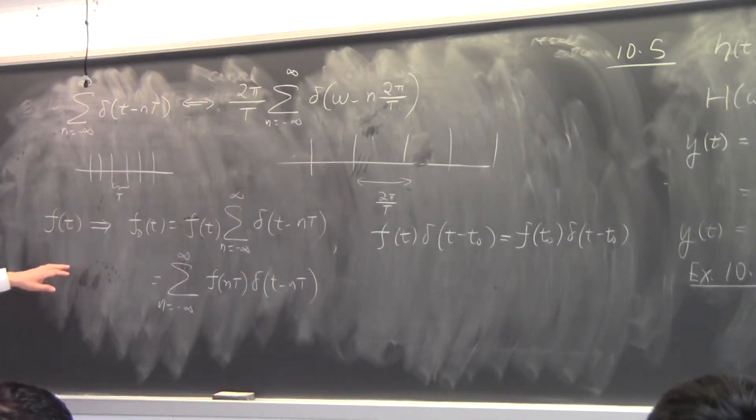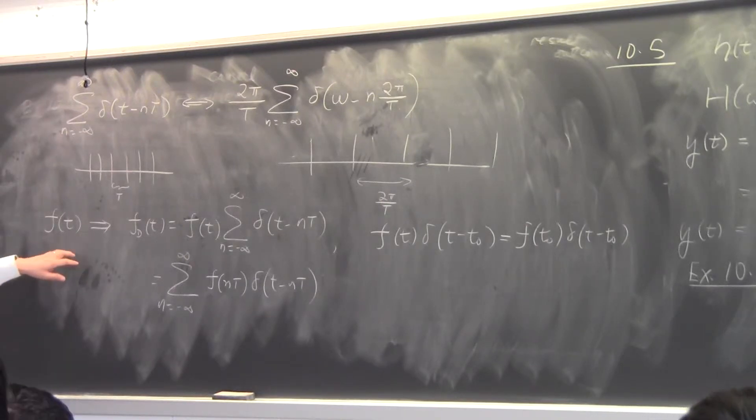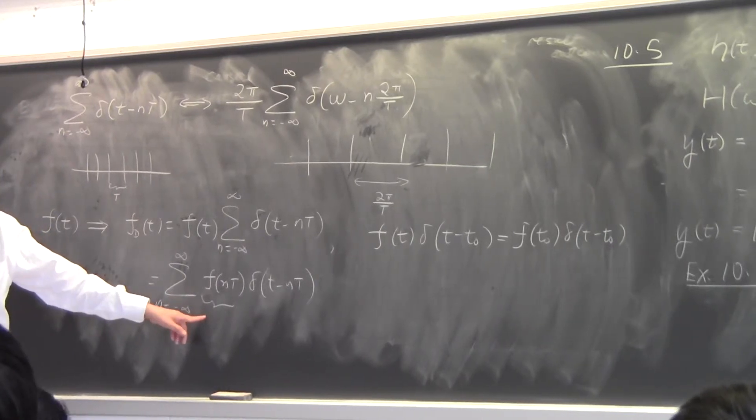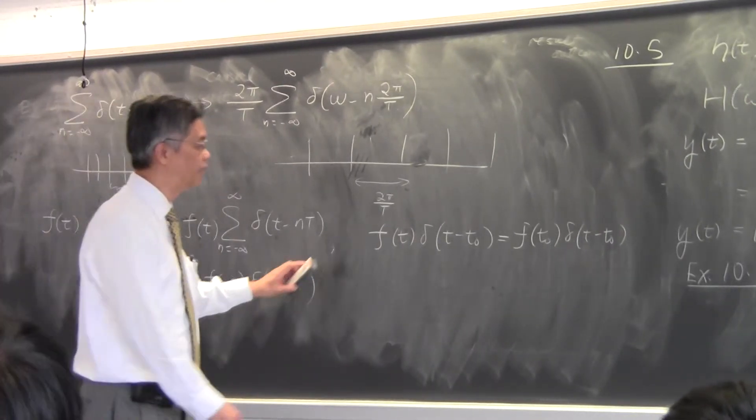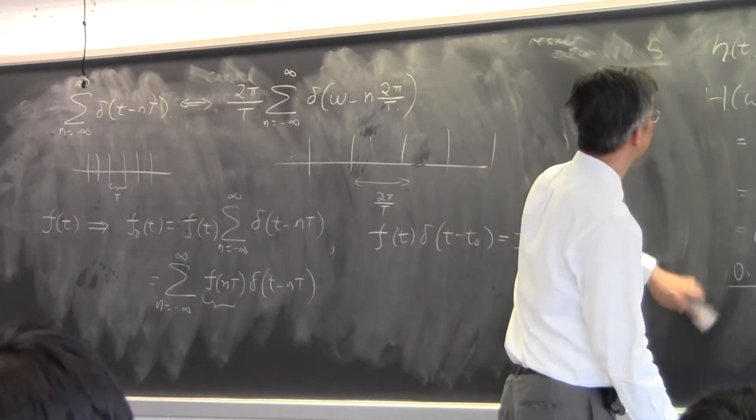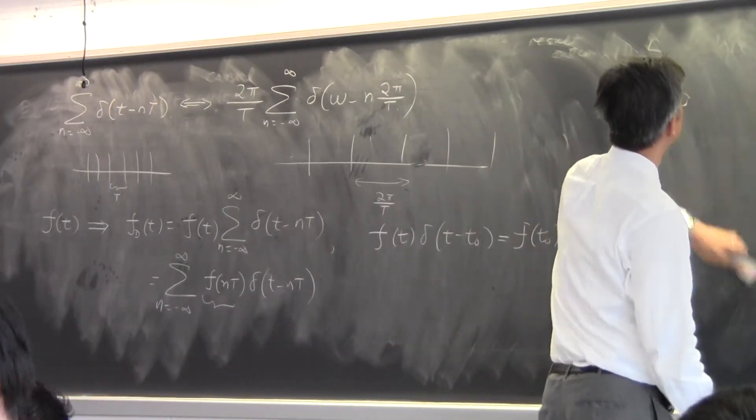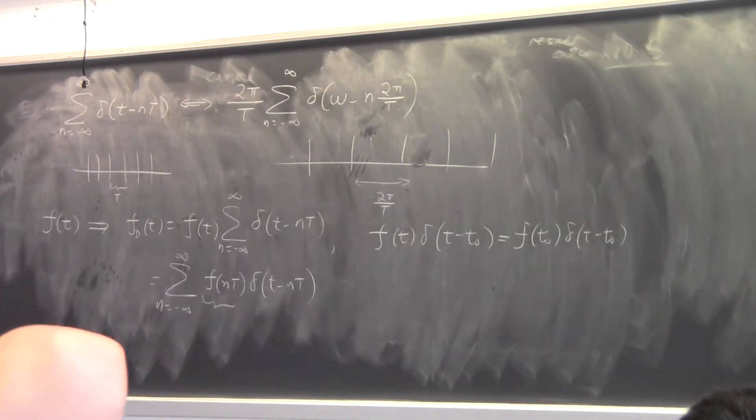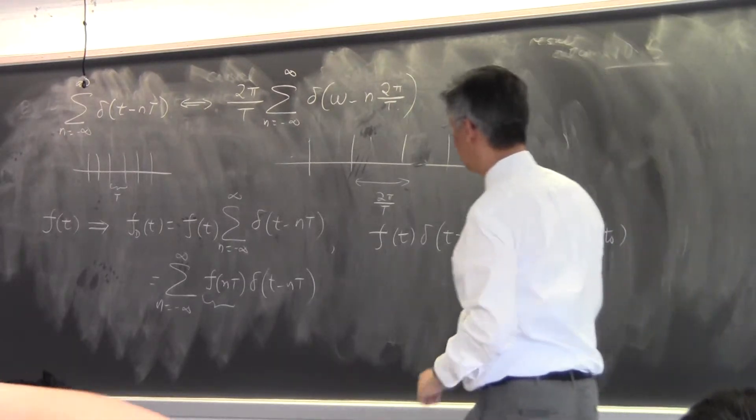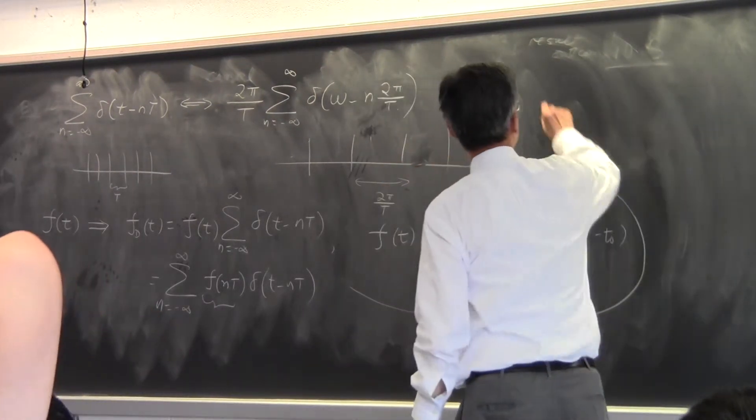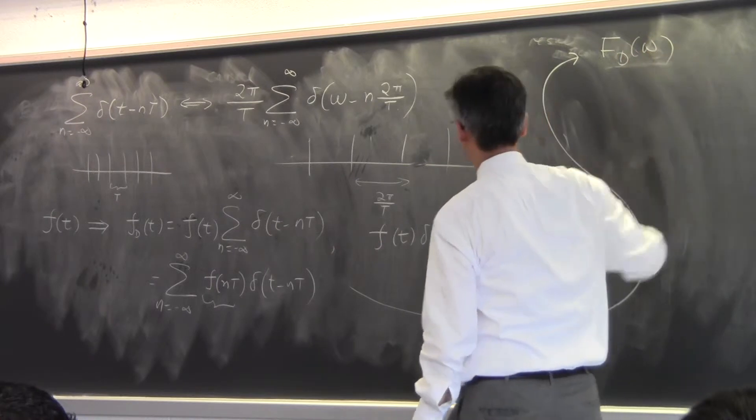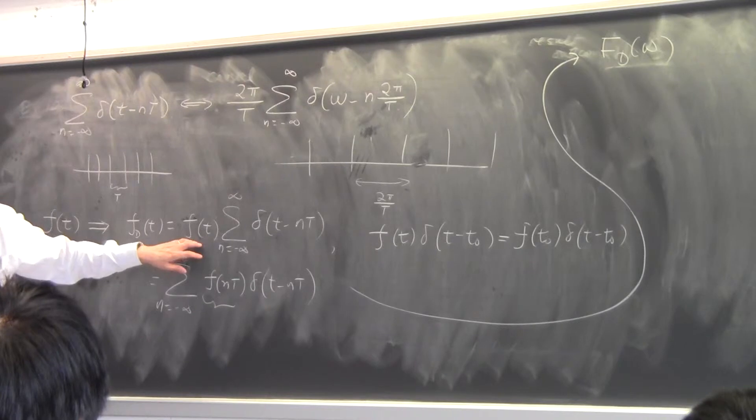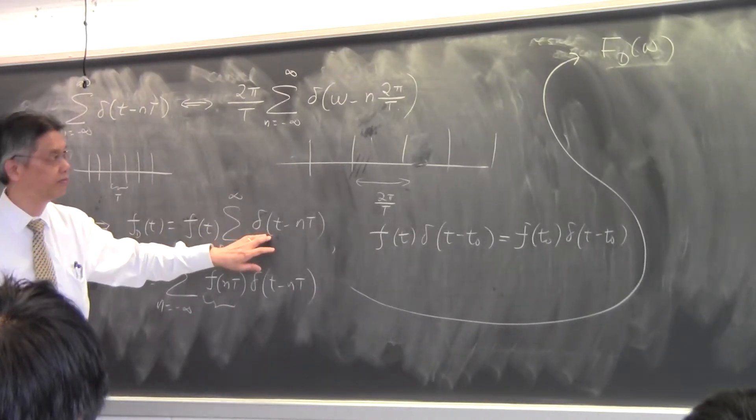So, what it says is that, if I have this thing, I need to only store this data. This data need only to be stored at sample value, they're not spaced apart. But what this says is that, the Fourier transform of, if I find Fd of omega, which is the Fourier transform of this quantity, it will be the Fourier transform of this convolving with the Fourier transform of that.